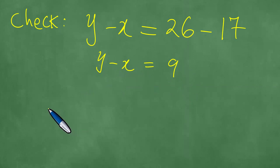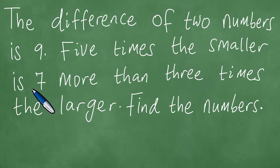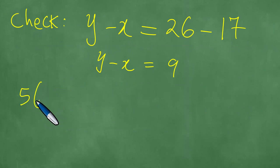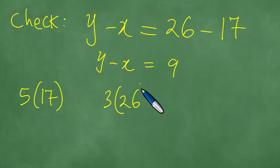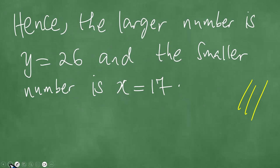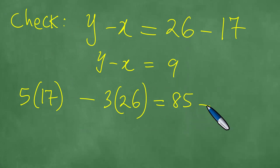Now according to the second condition, five times the smaller should be seven more than three times the larger. Five times the smaller — the smaller is 17. Three times the larger — the larger is 26. Five times 17 equals 85, and three times 26 equals 78. Therefore, 85 minus 78 equals seven.